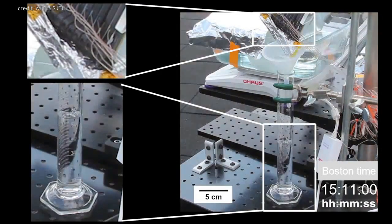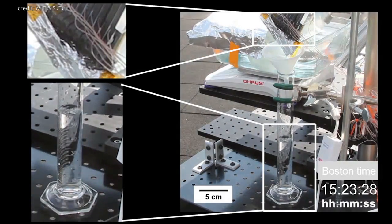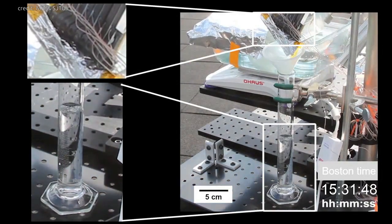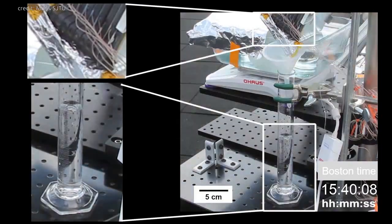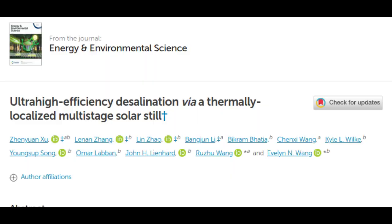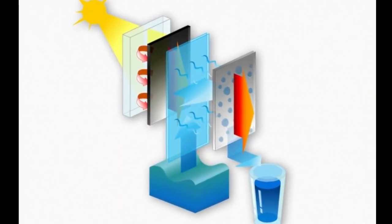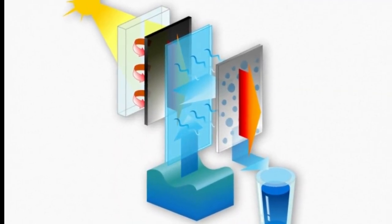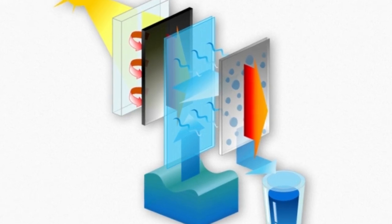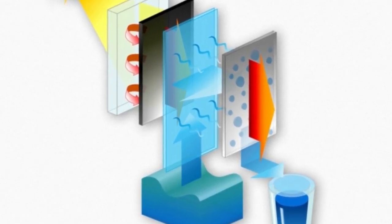The team's key contribution is a framework for understanding how to optimize such multistage passive systems, which they call thermally localized multistage desalination. The formulas they developed could likely be applied to a variety of materials and device architectures, allowing for further optimization of systems based on different scales of operation or local conditions and materials.